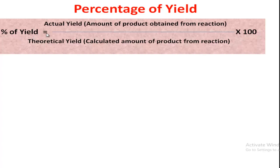We can determine the percentage of yield by this formula: Percentage of yield = (Actual yield ÷ Theoretical yield) × 100. Here, actual yield is the amount of product obtained from the reaction, and theoretical yield is the calculated amount of product from the balanced equation for the given reactant amount.